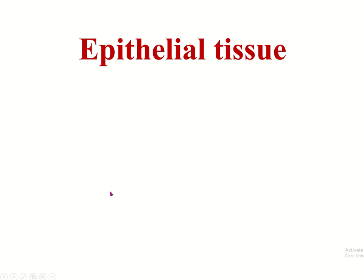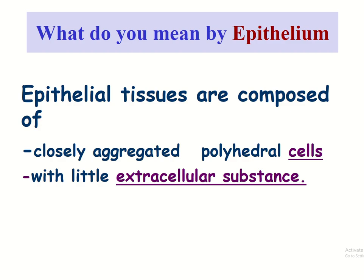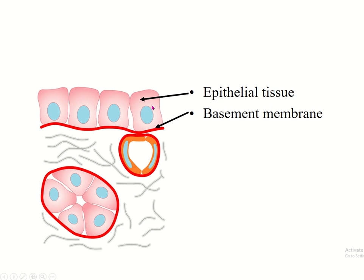Now, epithelial tissue. Epithelial tissue is composed of closely aggregated polyhedral cells with little extracellular matrix or substance. The epithelial cells are closely attached to each other and rest on a basement membrane. The tissue has an apical surface, a lateral surface, and a basal surface.